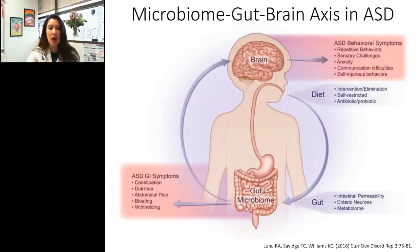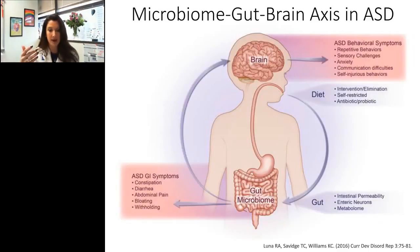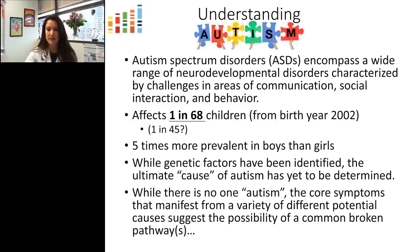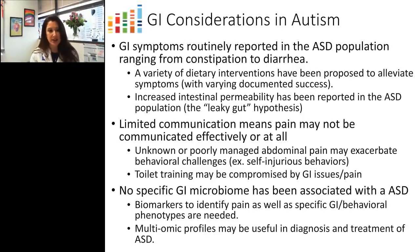Focusing on the microbiome gut-brain axis in autism: multiple factors contribute to gastrointestinal and behavioral issues in ASD. It's easy to envision a never-ending cycle where a child with sensory issues withholds stool, leading to bloating and abdominal pain; difficulty communicating leads to expressing pain via self-injurious behavior; and that stress causes even greater GI distress. Although we've yet to identify a singular cause of autism, there remains a set of core ASD symptoms that manifest from a variety of potential causes, suggesting there could be common broken pathways.